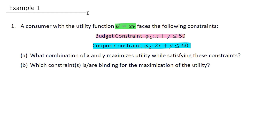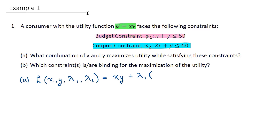What combination of x and y maximizes utility while satisfying these conditions? Let's set up our Lagrange equation. Our Lagrange equation is a function of x, y, lambda 1, and lambda 2, equal to our utility function — the function we want to optimize — x, y, plus lambda 1 times the budget constraint of 50 minus x minus y, plus lambda 2 times the coupon constraint of 60 minus 2x minus y.